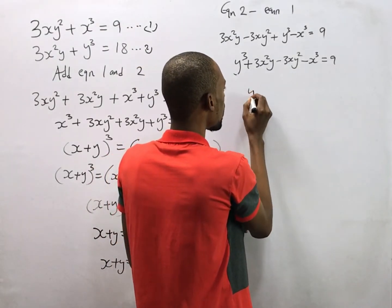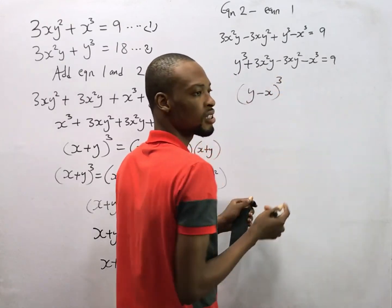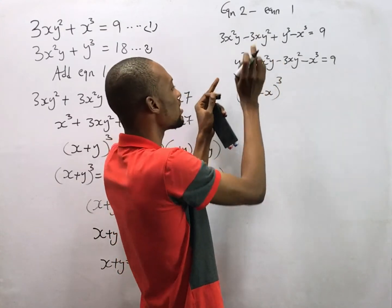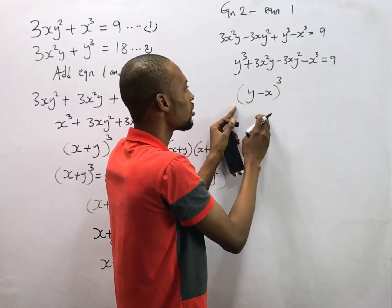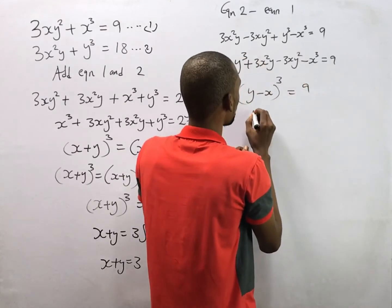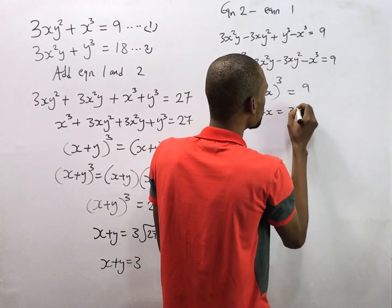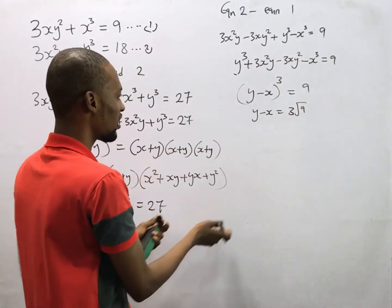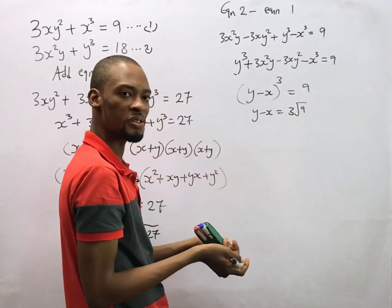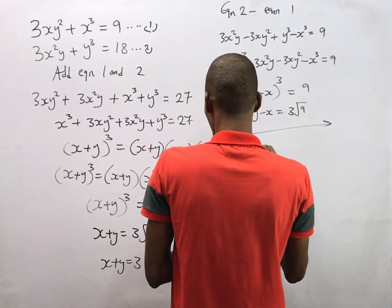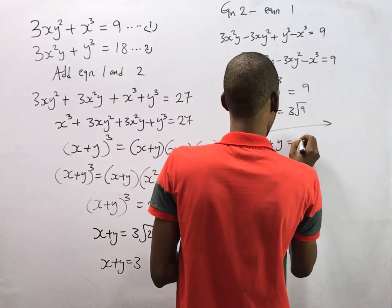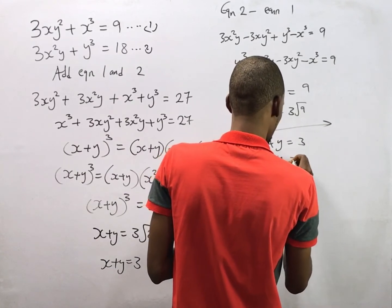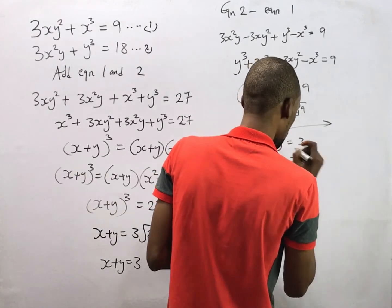Just like we did before, once you simplify and expand, you find this expression equals (y − s)³ = 9. So y − s equals the cube root of 9. Here we've gotten s + y = 3 and here we've gotten y − s = cube root of 9.